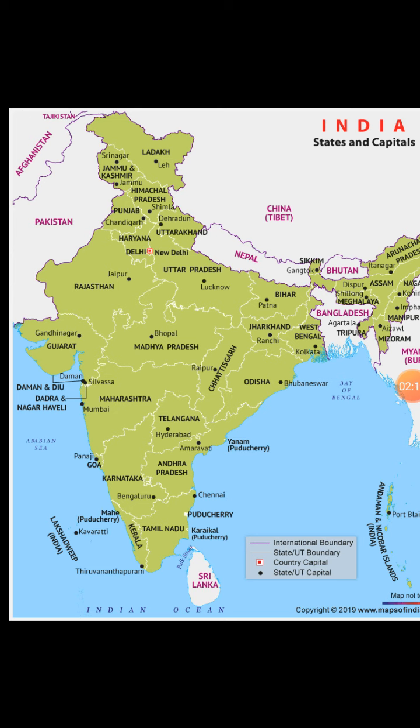Lucknow is the capital of Uttar Pradesh and Patna is the capital of Bihar. For central India, Bhopal is the capital of Madhya Pradesh. Gujarat's capital is Gandhinagar. Maharashtra's capital is Mumbai. Karnataka's capital is Bengaluru. Kerala has its capital Thiruvananthapuram, and the capital of Tamil Nadu is Chennai.